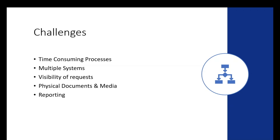This next slide shows some of the most common challenges our NHS customers tell us about. Many current processes are very time-consuming, with actions recorded manually. Each department manages their own requests, which means there are separate processes managed slightly differently. This makes it difficult to get an overview of everything being worked on — what's outstanding, what's been processed, and what's overdue. With the drive for digital transformation, current processes are often reliant on physical documents and media. Most people we've spoken to spend a fair amount of time manually collating reports and performance metrics, and they were looking for an easier way to manage this.